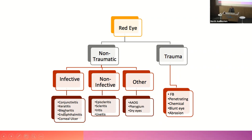Infective causes: blepharitis is very common — it's really inflammatory rather than infective, but it's common. Conjunctivitis is common. When people say 'corneal ulcer,' know what you mean — is it just a corneal abrasion (a scratch) or is it an infection, which would really be called microbial keratitis? Non-infective causes include episcleritis, scleritis, uveitis or iritis — depending on which part of the uveal tract is inflamed — and acute angle closure glaucoma.